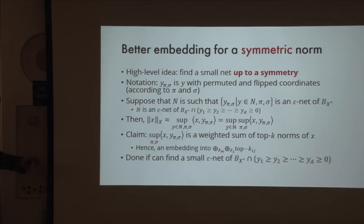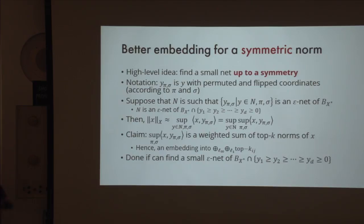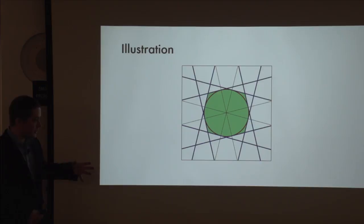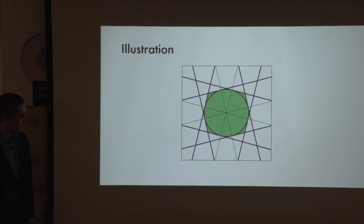The polynomial bound requires two more tricks, but the main ideas are already here for quasi-polynomial. The key insight is that in high dimensions, exploiting symmetry makes the difference between exponential and polynomial—not just shaving constant factors. If you add one point to the net up to symmetry, you effectively get many directions by applying all symmetries. You have 2^D times D-factorial symmetries in total.